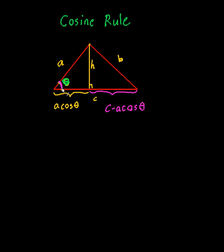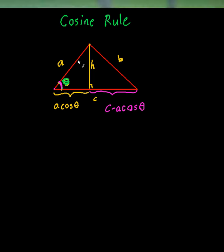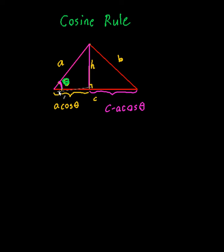The first equation I'm going to write is when I consider this triangle. Using Pythagoras, the equation I get is (a cos θ)² + h² = a². If you notice, I can rewrite this as a² cos² θ + h² = a². This is going to be my first equation.